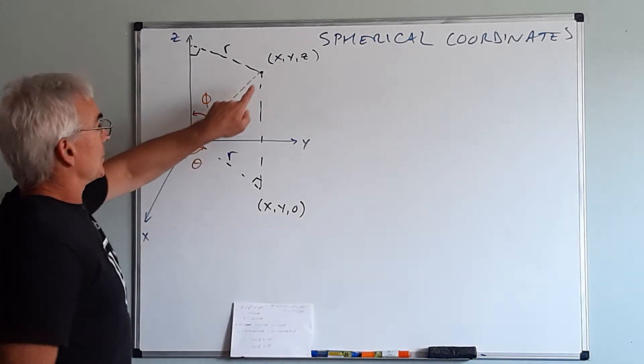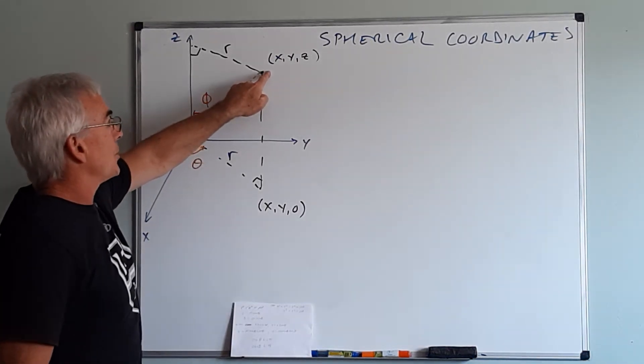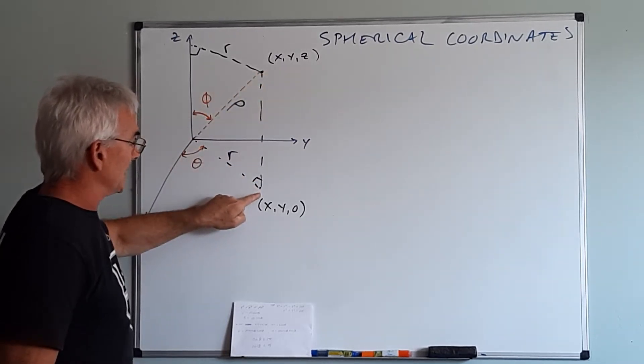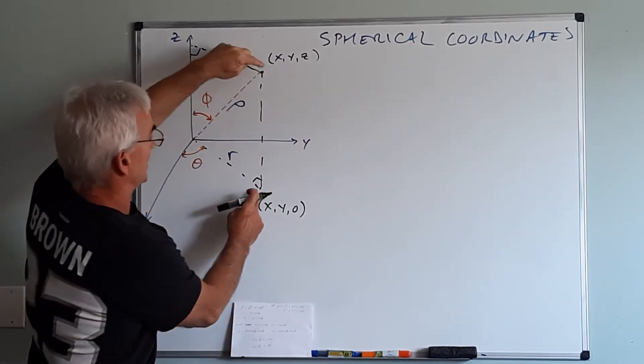So let's consider that I have a point in three space, let's call it x, y, z. If I project that down onto the x, y plane it will become x, y, zero with this being the z distance.